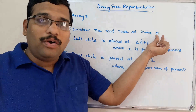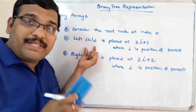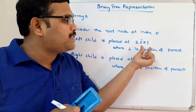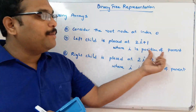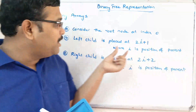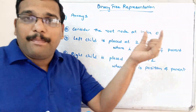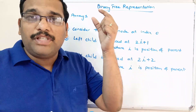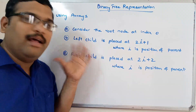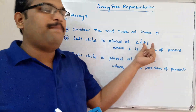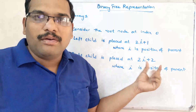So we need to follow these three rules while representing any binary tree in a single dimensional array. The root will be considered at index 0, every left child will be placed at 2i+1, and every right child is placed at 2i+2, where i is the position of the parent. Based upon the position of the parent, we calculate the position of the left and right child.